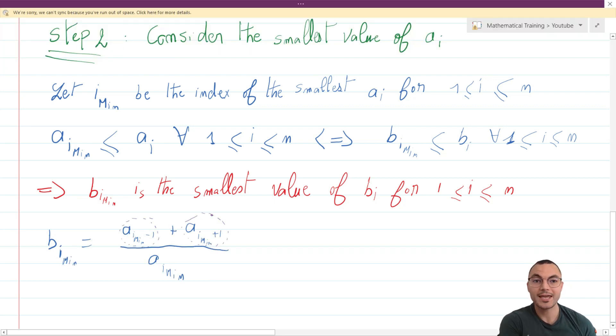Once again, by definition, bi_min is equal to this expression, which is greater than or equal to 2·ai_min over ai_min, which is equal to 2. So bi_min equals 2. Things are getting clear now.